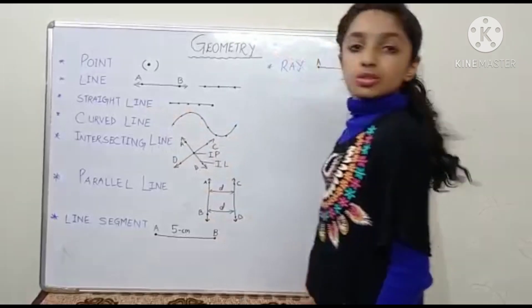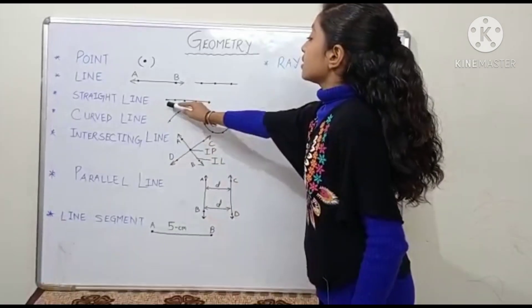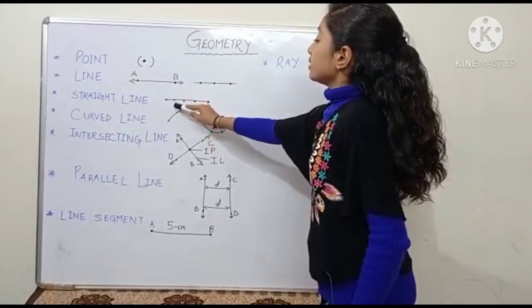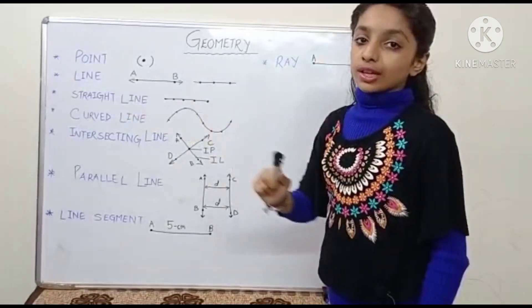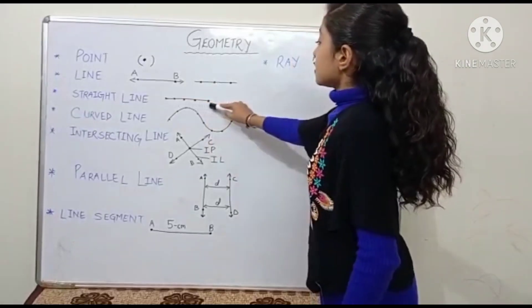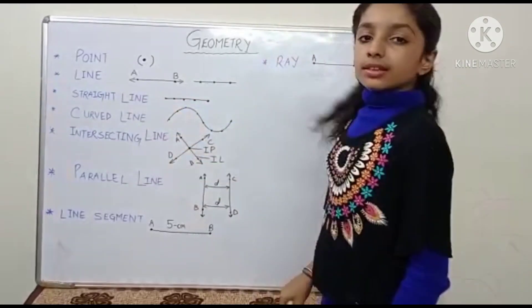Now, straight line. So friends, straight line is a line which is formed by joining the points together but in same direction without any turn. So this line is a straight line.